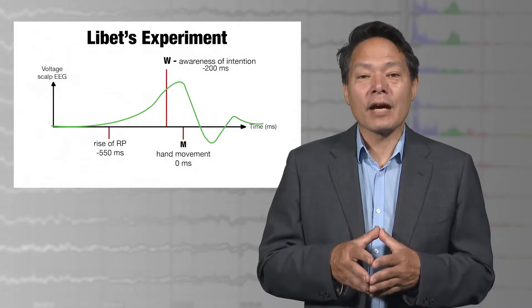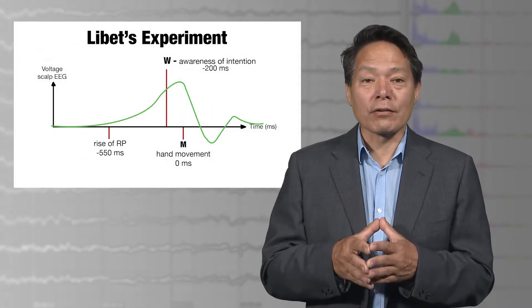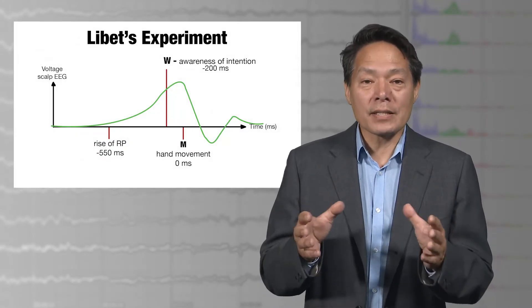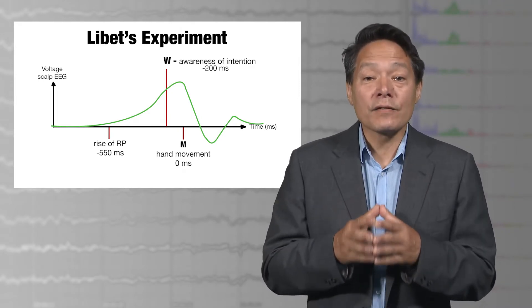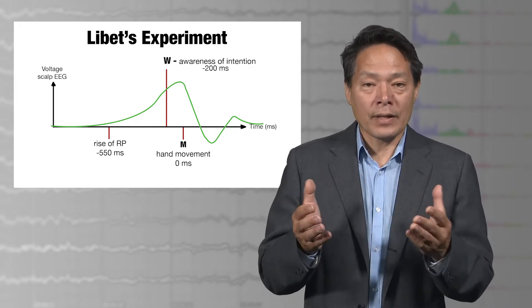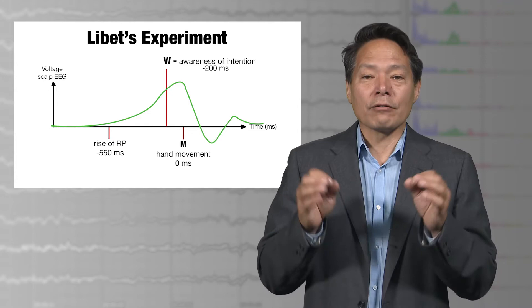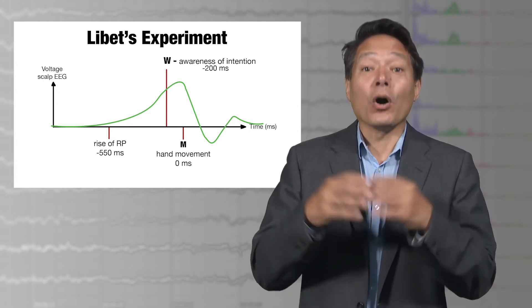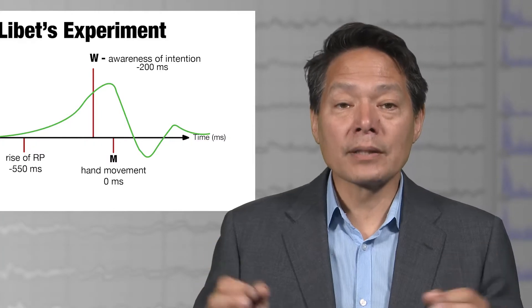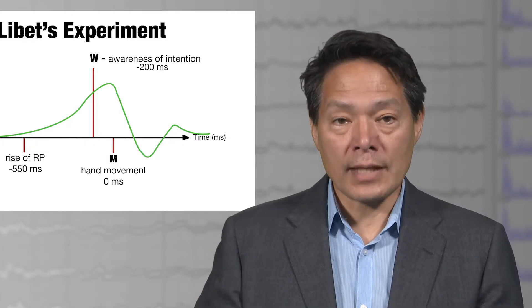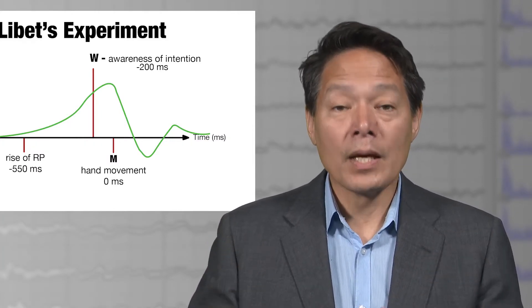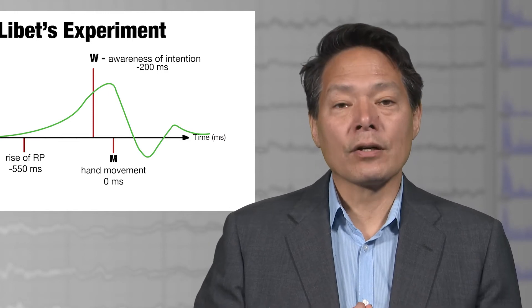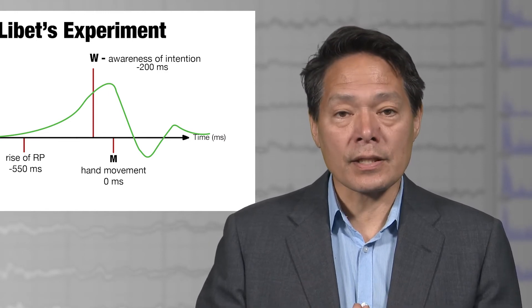So Libet's claim to have proven consciousness in general to be epiphenomenal on the basis of the special case of conscious feelings of willing being epiphenomenal is not only a radical overgeneralization from a special instance of consciousness to all of consciousness. It is built on a mistaken notion of causation as sufficient, when really, we should be basing our notions of causation on what is necessary here, not sufficient.